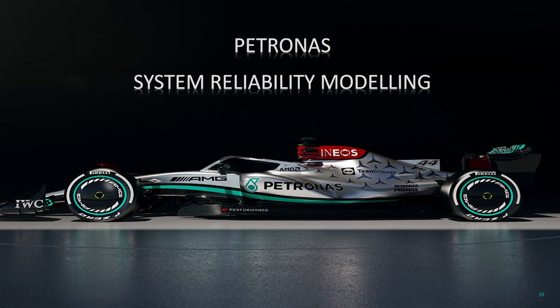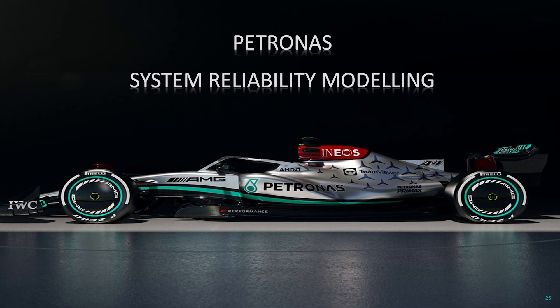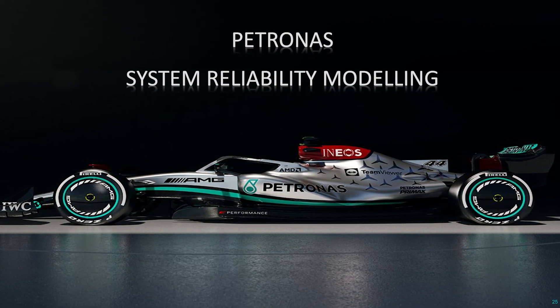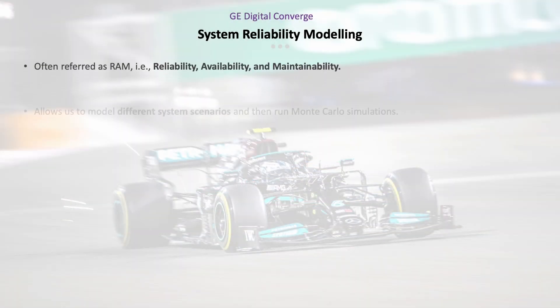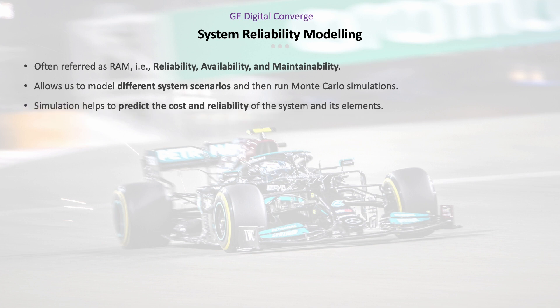This system reliability modeling analysis — we are able to complete it after the program with the knowledge we gained. System reliability modeling is one of the sub-modules in the APM reliability pillar, commonly known as RAM analysis or RAM modeling. It uses failure data, failure modes, repair data, and maintenance strategy. We define the system scenario, then run the Monte Carlo simulation, which helps provide the system availability and total cost.